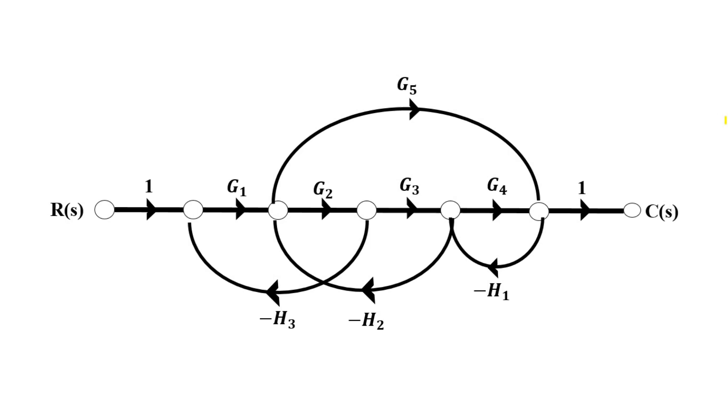To understand this clearly, we will take one example of a signal flow graph and try to solve it by Mason's Gain formula. In between, we will discuss the rules. So stay tuned until the end of this video.